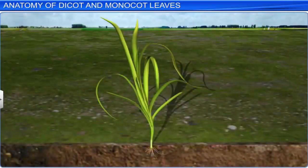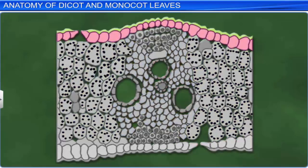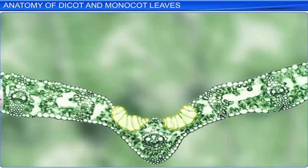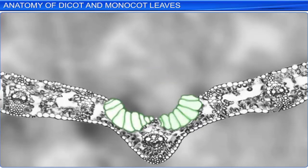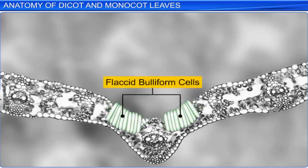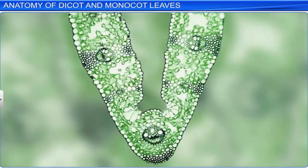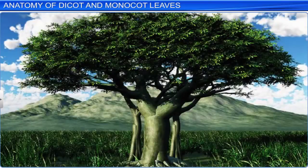In the leaves of monocots such as grasses, veins and cells of the upper epidermis modify themselves as large, bubble-shaped, colorless cells also known as bulliform cells. On absorption of water, bulliform cells become turgid and expose the leaf's surface. Conversely, in water stress situations, there is loss of turgor pressure and bulliform cells become flaccid. As a result, the leaves curl inwards to minimize water loss. Since major food production takes place in leaves, they are aptly known as the plant's powerhouse of energy.